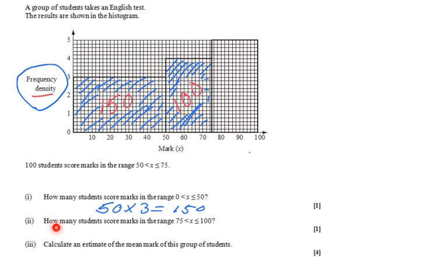How many students scored a mark in a range from 75 to 100? Then again, it's 25 times 5. 25 times 5, I need a pen for that. 25 times 5 equals 125. So they're going to be 125 students over there. Good. Area, frequency density. We understand that now.